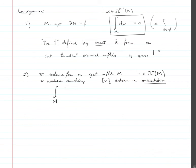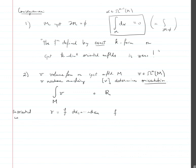Now that we have an orientation on the manifold m, we can integrate v, and this gives a number. We know that if v is nowhere vanishing, we can write v as f dx1 ∧ ... ∧ dxn. In oriented coordinates, the natural volume form should be equivalent to v, related by a positive function f.